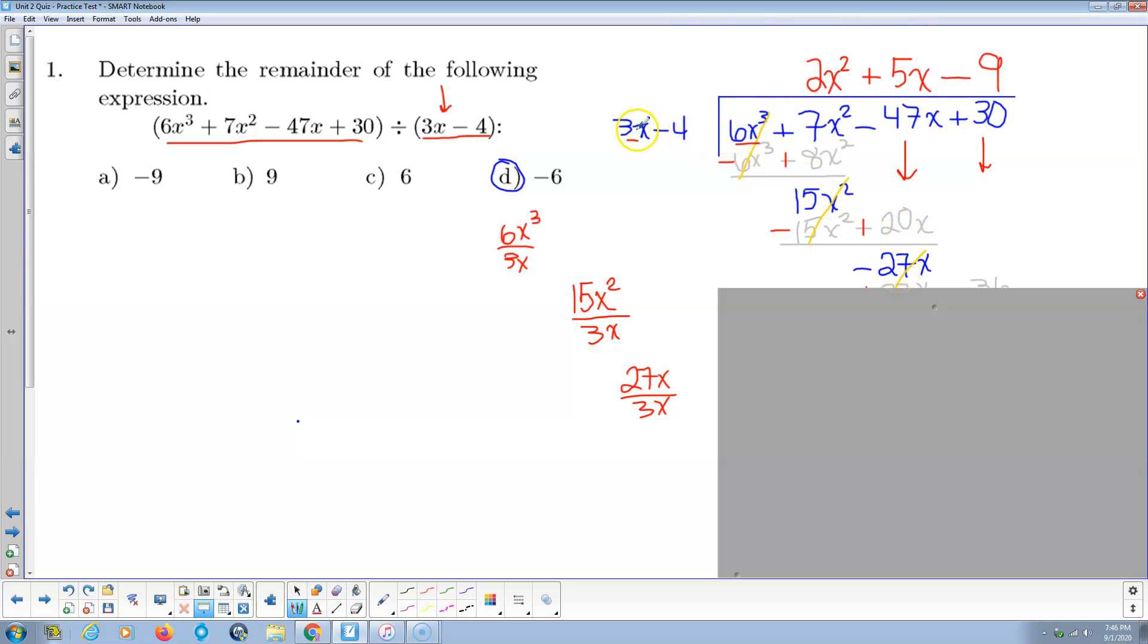And then we change the signs and add. So the x² cancel. We get negative 47x plus 20 of them give me negative 27x. First term divided by first term again. Negative 27x divided by 3. And so x divided by x, I cancel out. Negative by positive, negative. 27 divided by 3 means it's negative 9. We multiply back. Negative 9 times 3x is negative 27x. Negative 9 times negative 4 is positive 36.